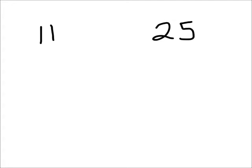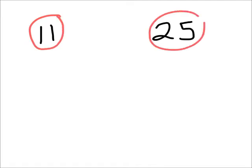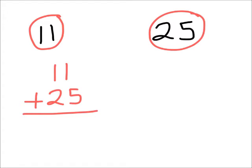The easiest way to do this is a very simple process that involves two steps. Step number one is to take both numbers and add them. As you can see on screen I'm doing a very simple, quick column addition. When I add them I get a total of 36.